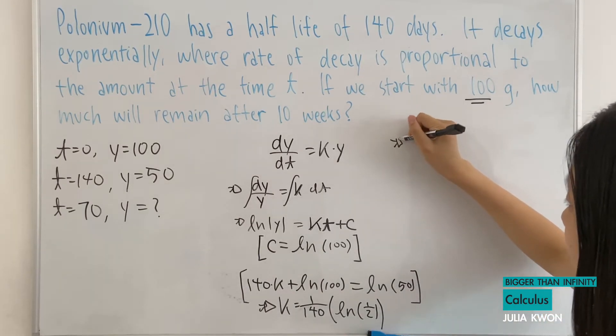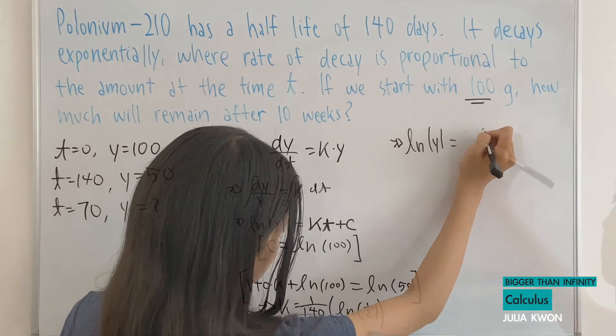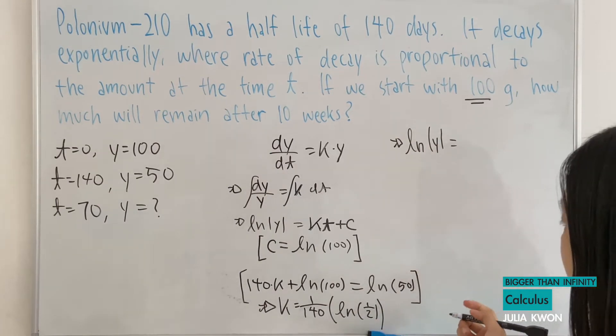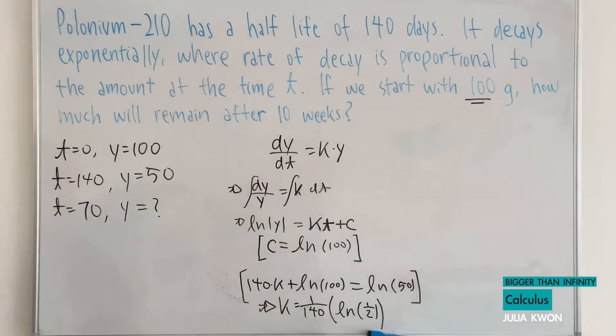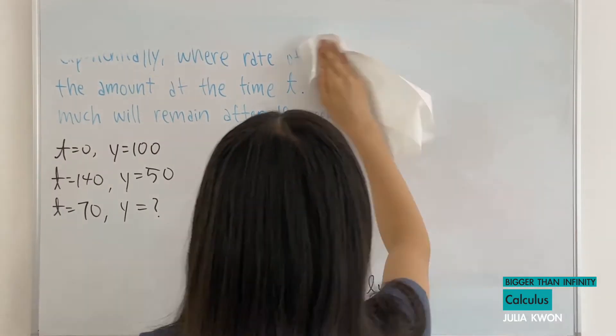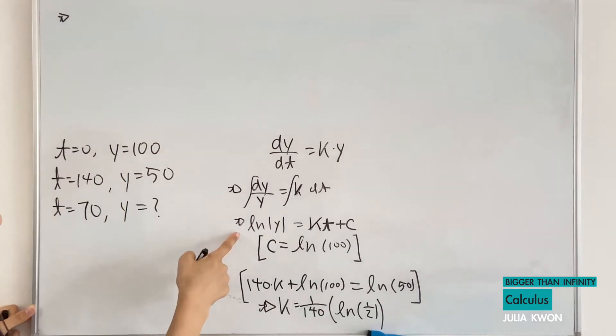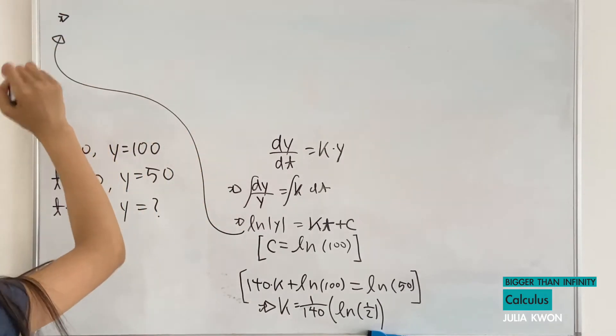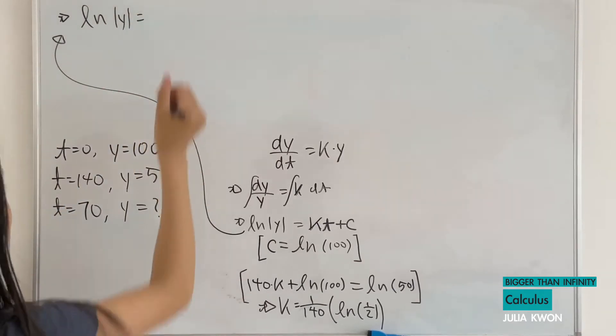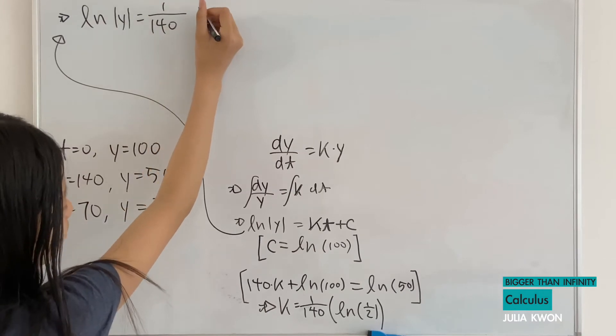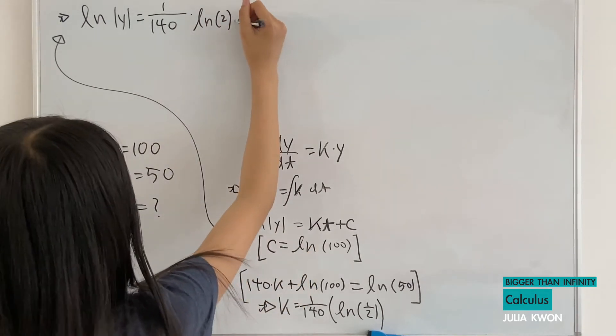Now, to put everything all together, we will have ln absolute value of y is equal to... Hold on, I'm not sure if I'll have enough space to write it. Since we don't need this anymore, I'll just erase it, and then we can work at the top. So we'll have ln of absolute value of y is equal to 1 divided by 140 multiplied by ln of 2, plus c, which is ln of 100.